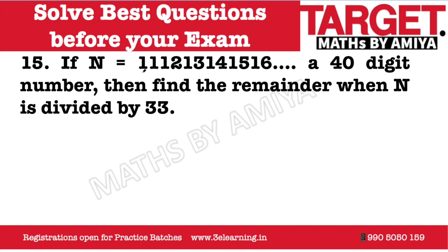The question is: we have 11, 12, 13, 14, 15, 16... and so on — it's a 40-digit number. A 40-digit number means we have 20 numbers written, because every number has double digits. So from 11, a total of 20 numbers means the last number is 30. So it is written 11, 12, 13, up to 30.